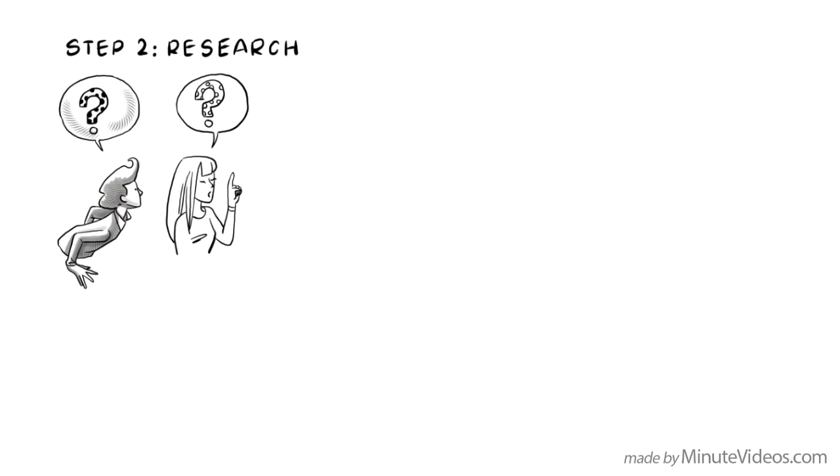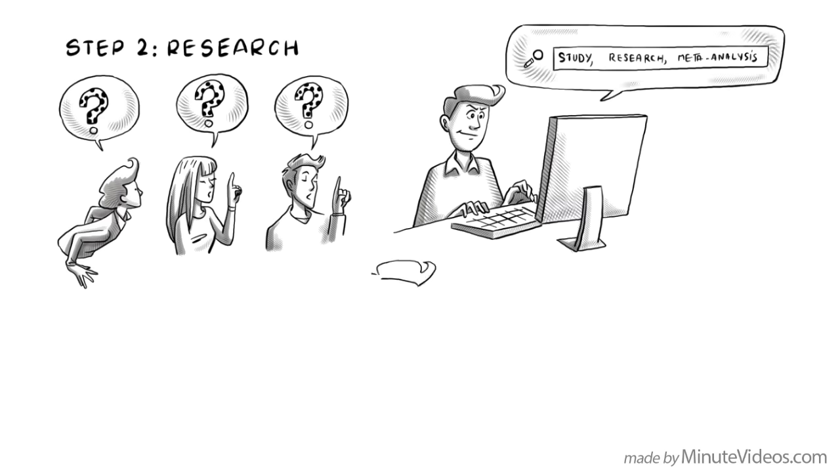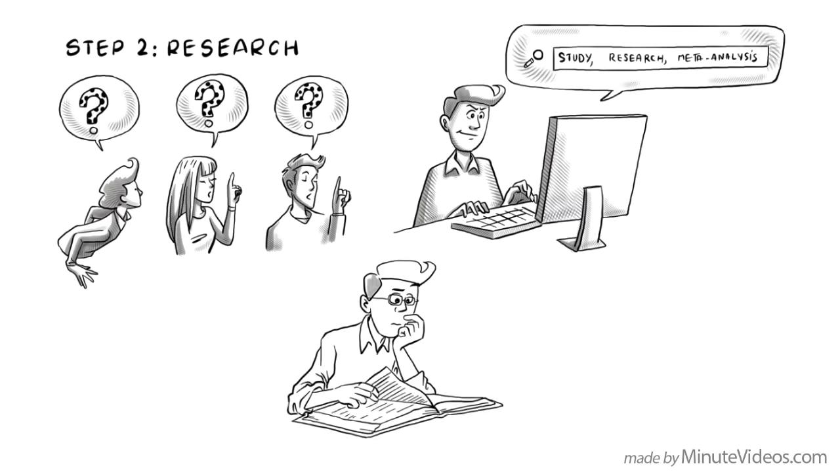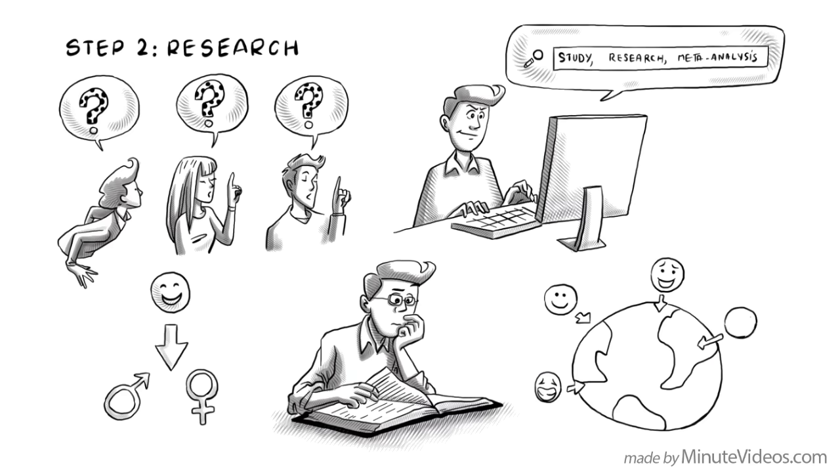Step 2. Research. Find out if other people have asked the same or similar questions. If you research online, use search terms like study, research or meta-analysis, which is a summary of research for a specific topic. Read as much as you can about your particular subject. For example, research happiness based on gender or study the science of smiling in different cultural contexts.